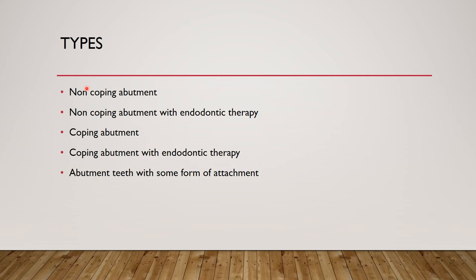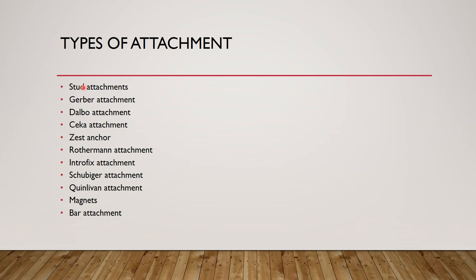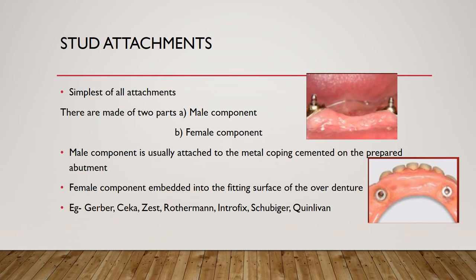Coming to the types of overdenture: non-coping abutment, non-coping abutment with endodontic therapy, coping abutment, coping abutment with endodontic therapy, and abutment teeth with some form of attachment. There are 10 to 12 different attachment types. The most important are stud attachment, bar attachment, and magnet attachment.